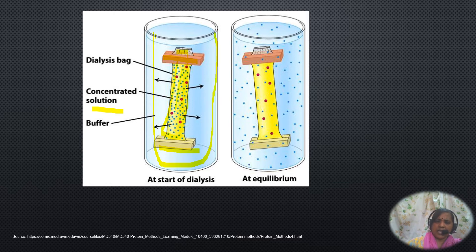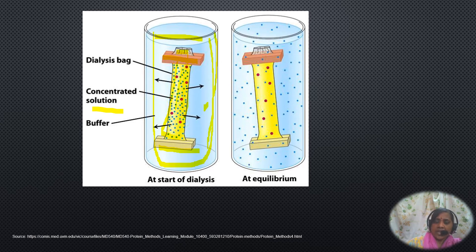The extract is put inside the dialysis tube, closed on both sides using a clip, and the dialysis tube is kept inside a beaker containing a buffer solution outside. Because the solute concentration inside the tube is higher, diffusion starts and continues until equilibrium is reached both outside and inside the tube. Only the small molecules that can pass through the membrane will come out, while the large molecules that cannot cross will be retained inside the dialysis bag.